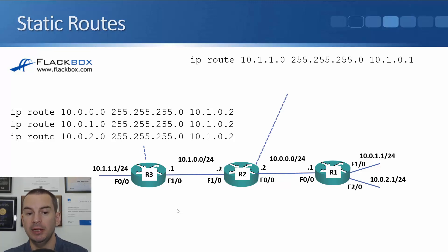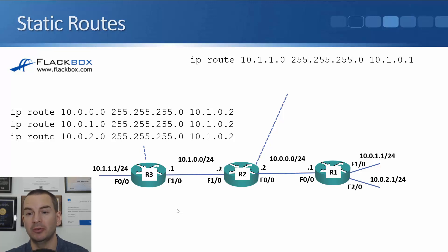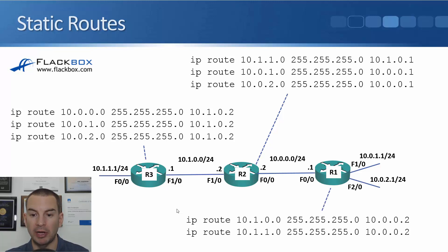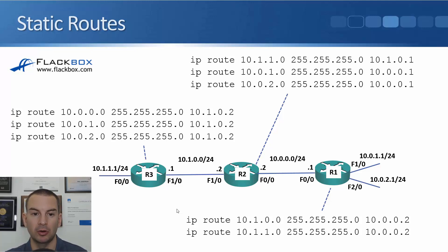The route on R2: it needs a route to get to 10.1.1 behind R3, so the command is IP route 10.1.1.0 255.255.255.0 with next hop 10.1.0.1, out the interface directly connected to R3. Then to get to the two routes behind R1, I've got IP route 10.0.1.0 and 10.0.2.0, both slash 24, so 255.255.255.0, with next hop 10.0.0.1. And finally, routes on R1 to get to 10.1.1 and 10.1.0 are both reachable via R2 at 10.0.0.2. Once all these routes are configured, we'll have reachability between all of the different subnets on our network.